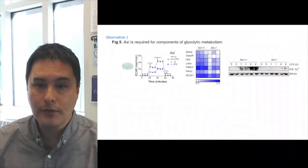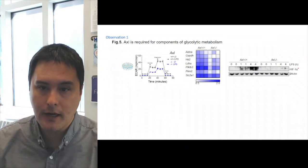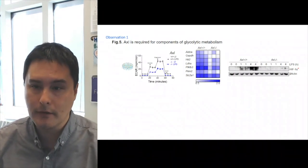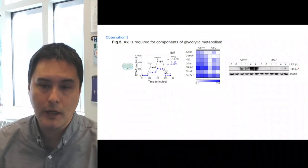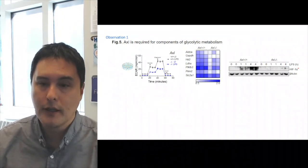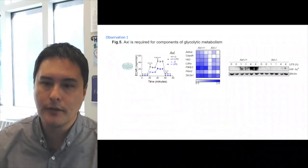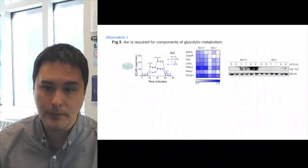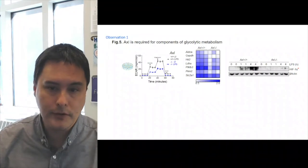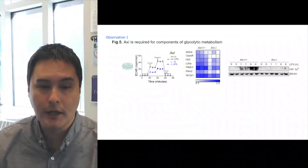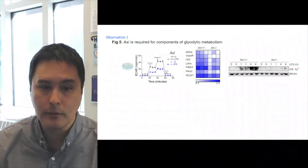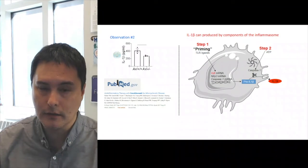One of the first observations that Matt made was in figure five that AXL is indeed required for components of glycolytic macrophage metabolism. He took AXL wild type and knockout macrophages in tissue culture and found that the AXL deficient macrophages upon activation with stimuli such as LPS exhibited reduced acidification of the media consistent with reduced glycolysis, reduced expression of glycolytic associated genes as shown by the heat map, and reduced activation of hypoxia inducible factor 1 alpha which is also affiliated with glycolytic reprogramming.